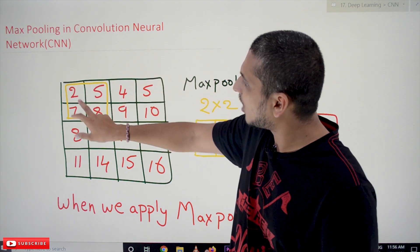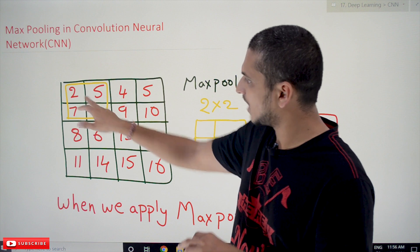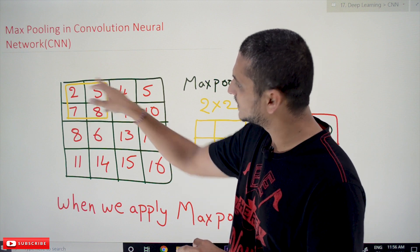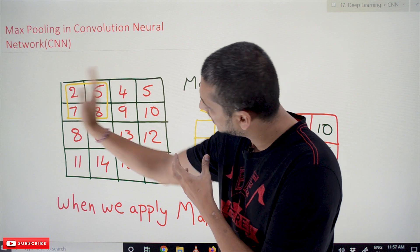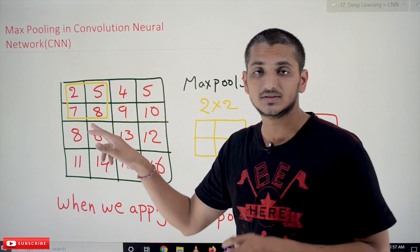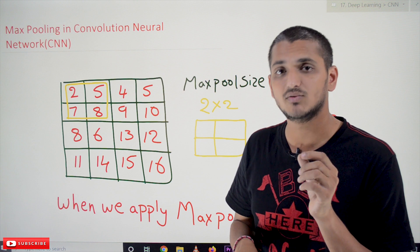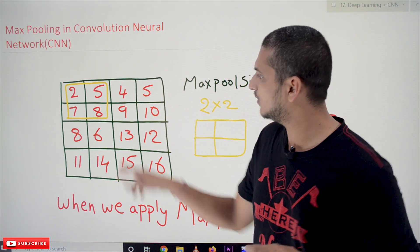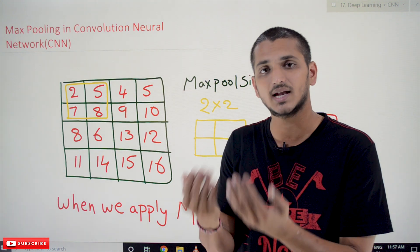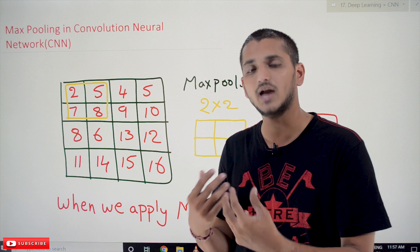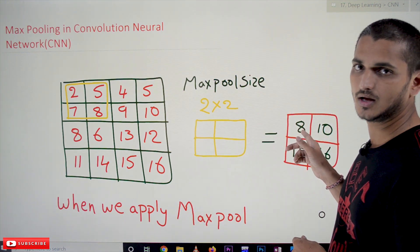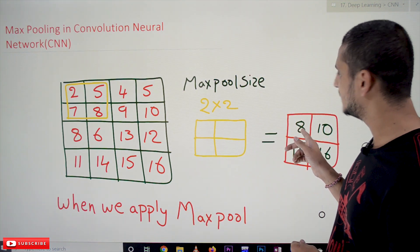So what does max pooling mean? We will place the 2x2 window on the image. The first window covers pixels with values 2, 5, 7, 8. Out of these 4 pixels, what is the maximum pixel value? 8 is the maximum value. That is what we select as the output and place it in the output image. So 8 is considered here.